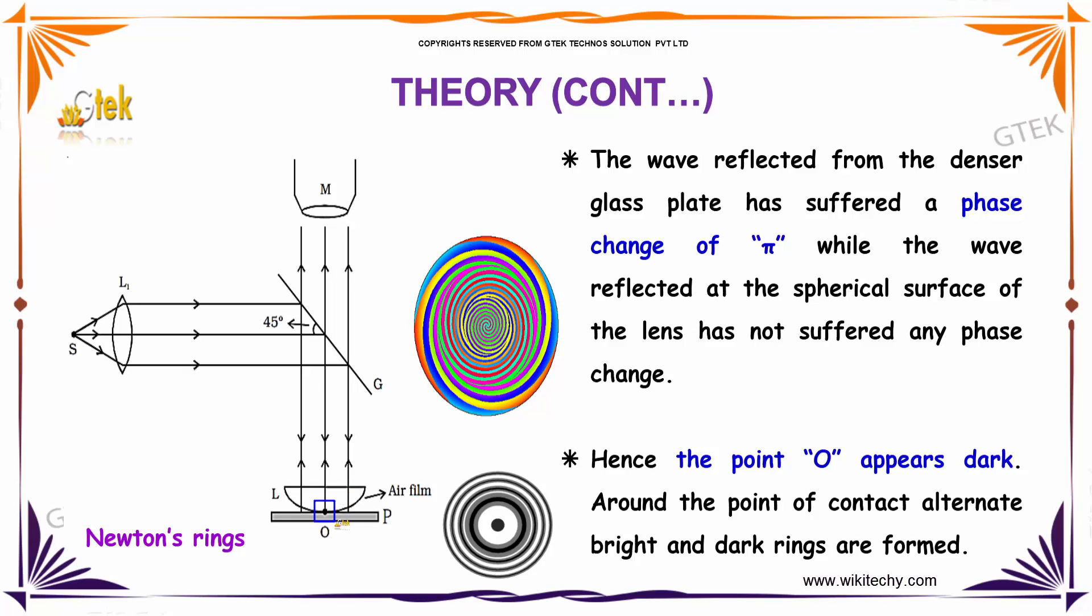Hence the point O appears dark. Around the point of contact, alternate bright and dark rings are formed.